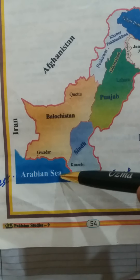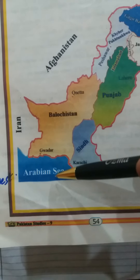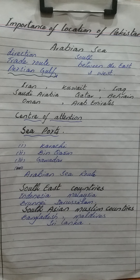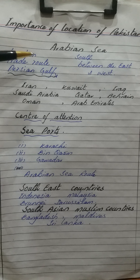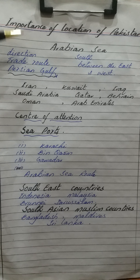Today our topic is the Arabian Sea, which is located towards the southern side of Pakistan. After having a look at the map of Pakistan, we will discuss the Arabian Sea. The main focusing point here is direction — the Arabian Sea is located towards the south. The Arabian Sea is a very important trade route between the eastern and western countries.